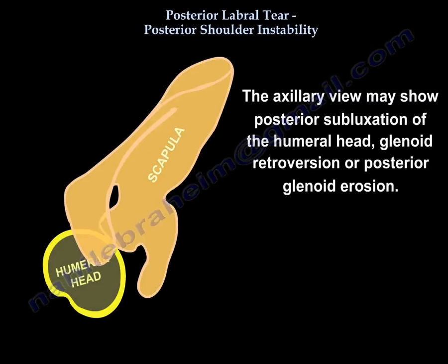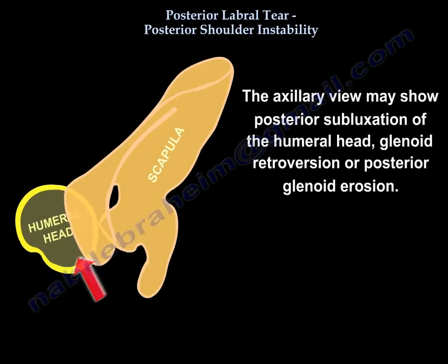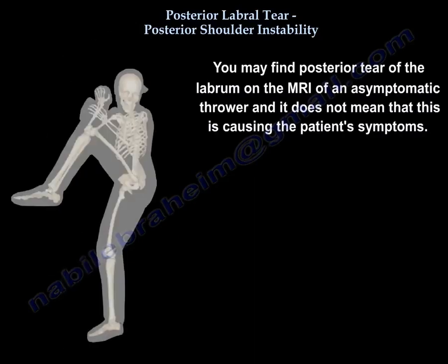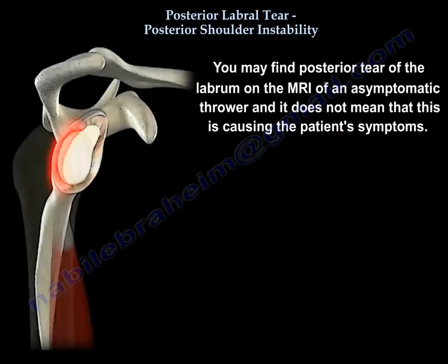X-ray review may show posterior subluxation of the humeral head, glenoid retroversion, or posterior glenoid erosion. MRI is the best study to diagnose posterior labral lesion. Arthrogram in addition to MRI will increase the sensitivity for labral pathology. You may find a posterior tear of the labrum on an MRI of an asymptomatic thrower, and it does not mean this is causing the patient's symptoms.